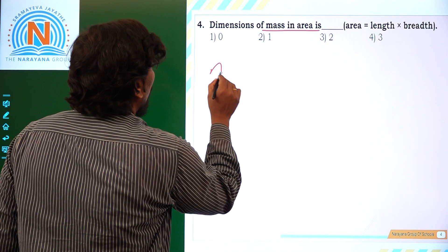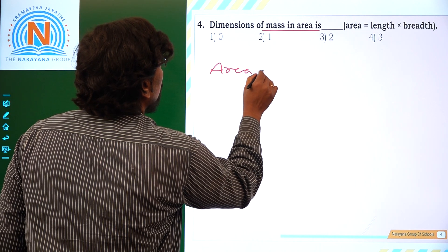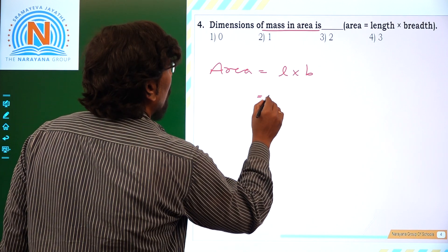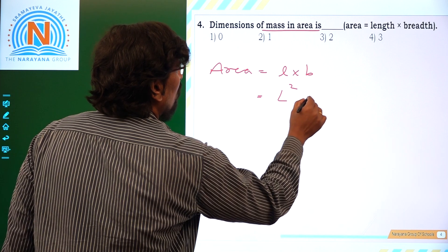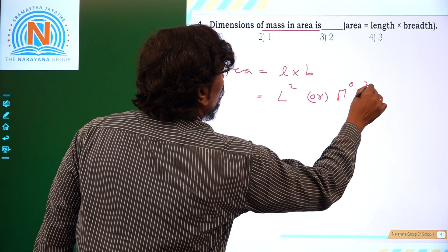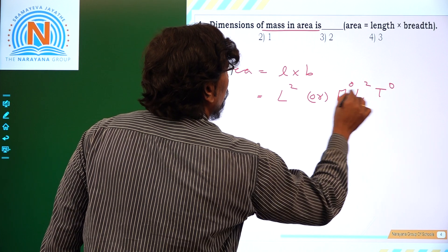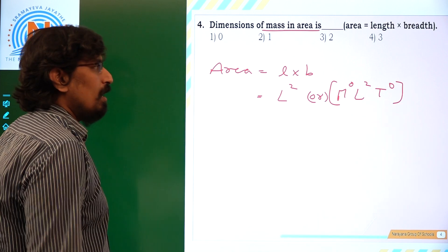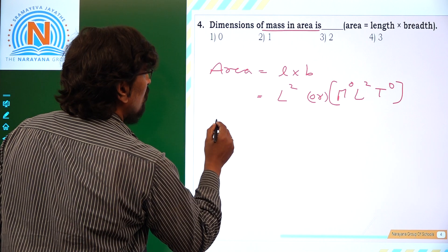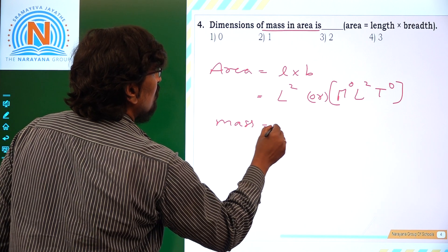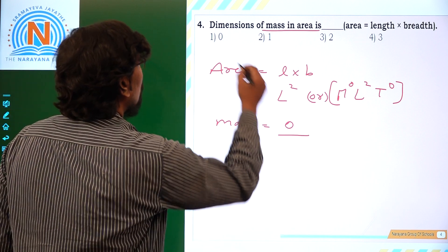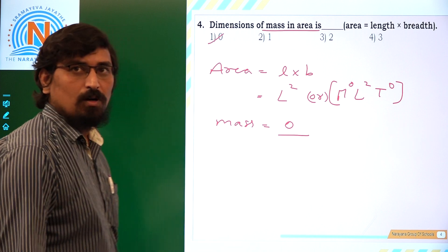Next: dimensional formula of mass in area. Area is equal to length into breadth, so the dimensional formula of area is M power 0, L power 2, T power 0. Here the mass dimension is M power 0, so the mass dimension is 0 in case of area. The option is 1.